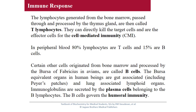Now the immune response. The lymphocytes generated from the bone marrow pass through and are processed by the thymus gland — then they are called T lymphocytes. They directly kill the target cells and are the effector cells for cell-mediated immunity. In peripheral blood, 80% of lymphocytes are T cells. Certain other cells originate from bone marrow and are processed by the Bursa of Fabricius in avians — these are called B cells. The Bursa equivalent organs in human beings are the gut-associated and the lung-associated lymphoid organs. Immunoglobulins are secreted by the plasma cells belonging to the B lymphocytes. The B cells govern humoral immunity.